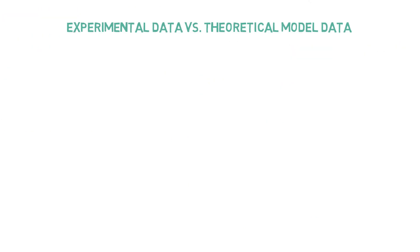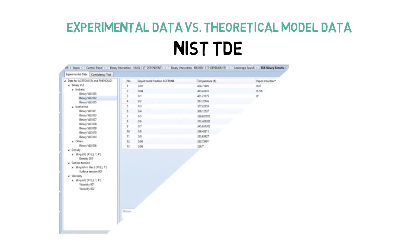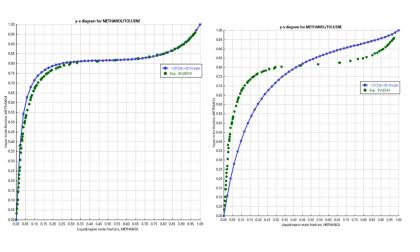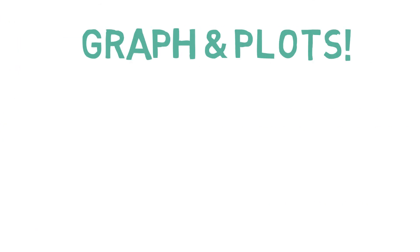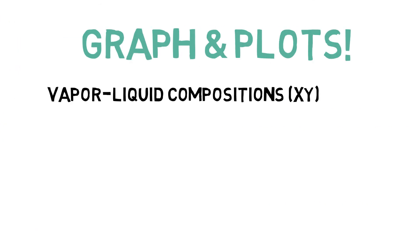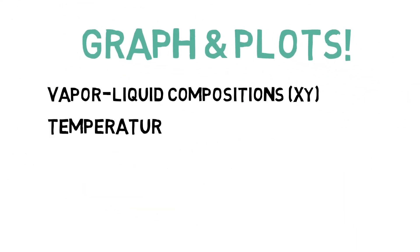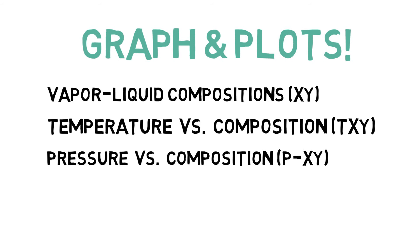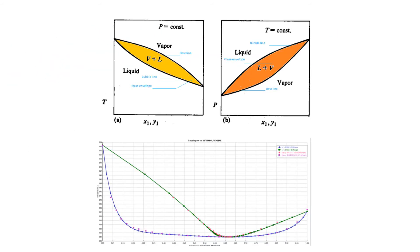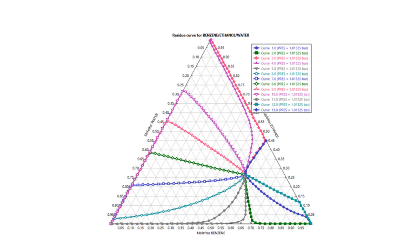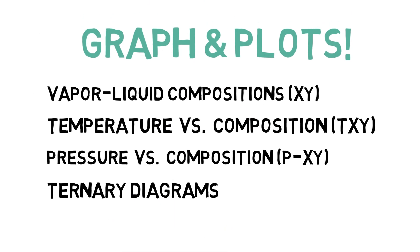Also, we check out the experimental data and feed it to our theoretical model using graphs and experimental points. We are going to learn how to plot relevant data, such as vapor-liquid compositions, XY diagrams, temperature and pressure versus composition diagrams used to identify ideal and non-ideal mixtures, ternary diagrams for three-component mixtures, and much more.